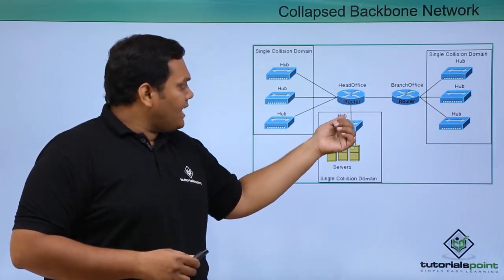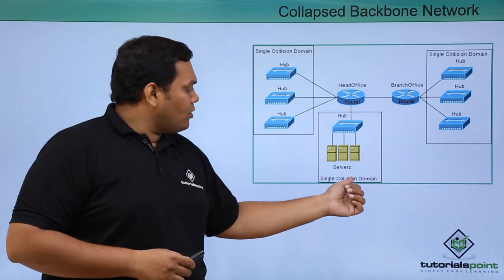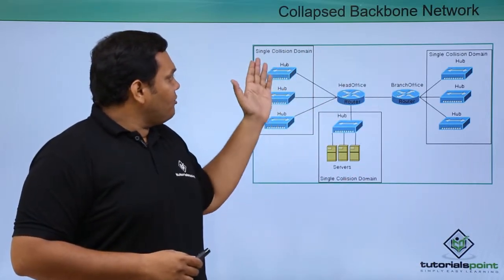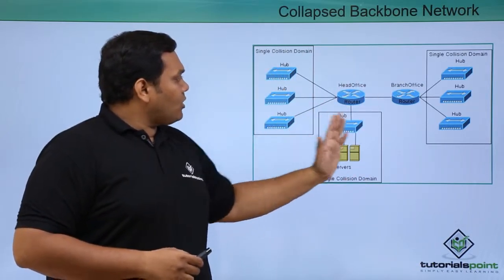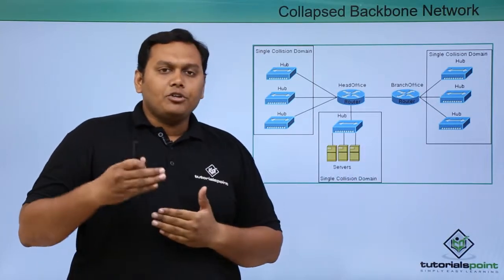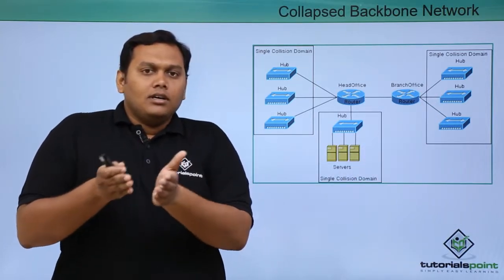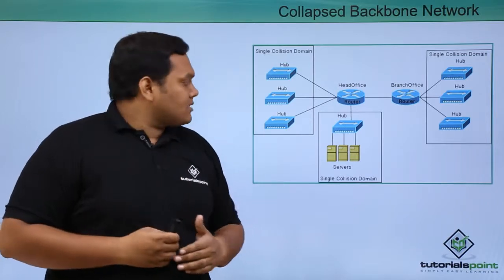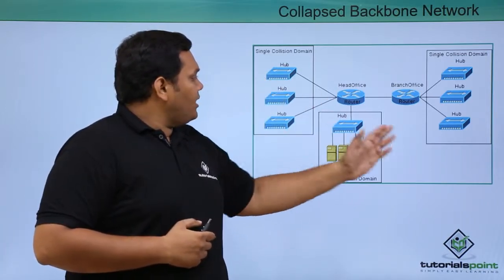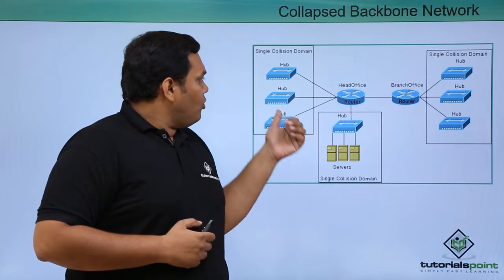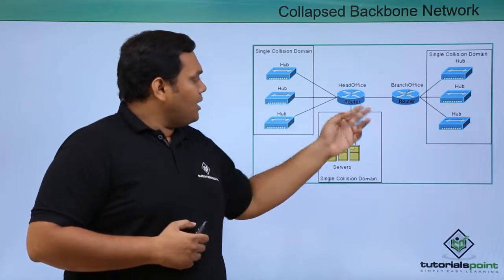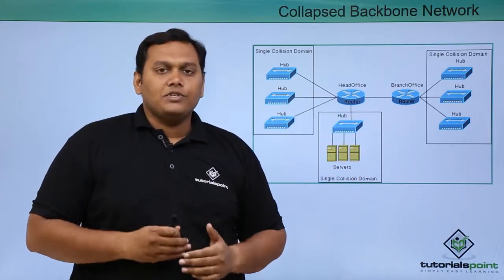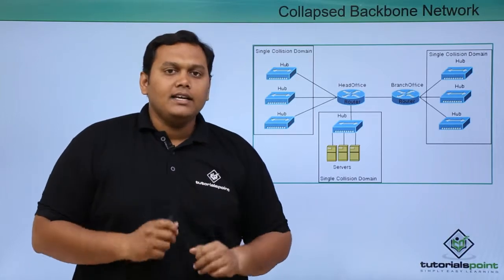A database hub is also connected in a single collision domain. The collapsed backbone network means if one network goes down, the other takes over its daily tasks. The collision domains here include one for hubs and one for the servers. This covers the overview of switches and their history.